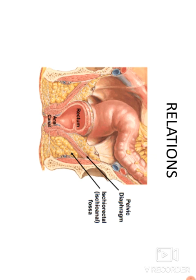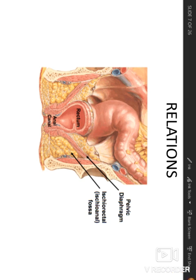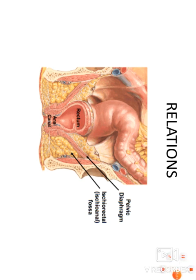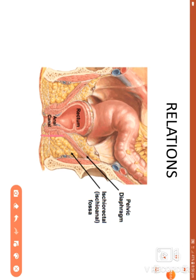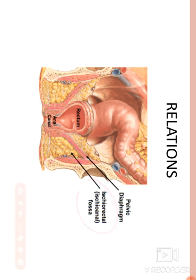The lateral relations: on each side, the anal canal is related to a space called the ischiorectal fossa, also known as the ischioanal fossa. This will be explained in detail in the next section.